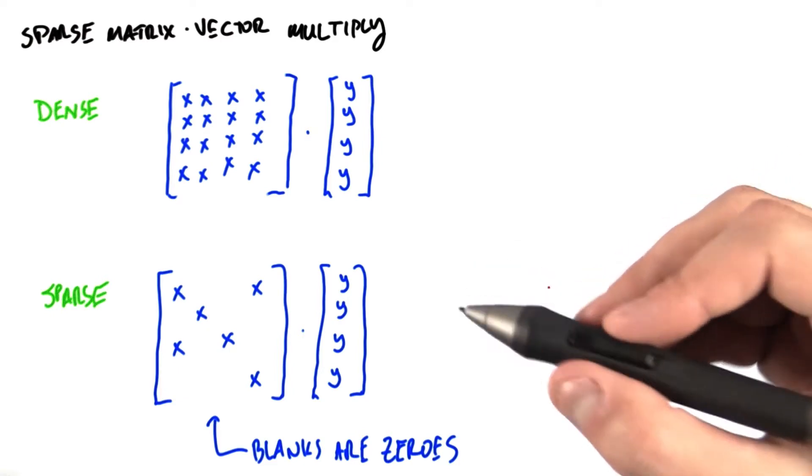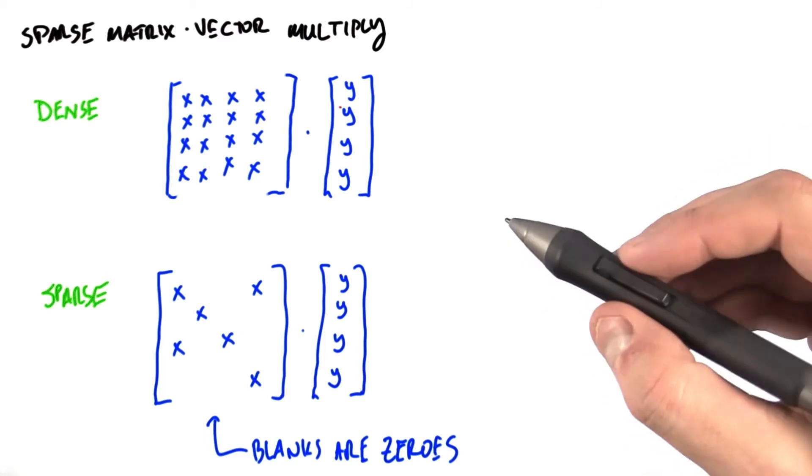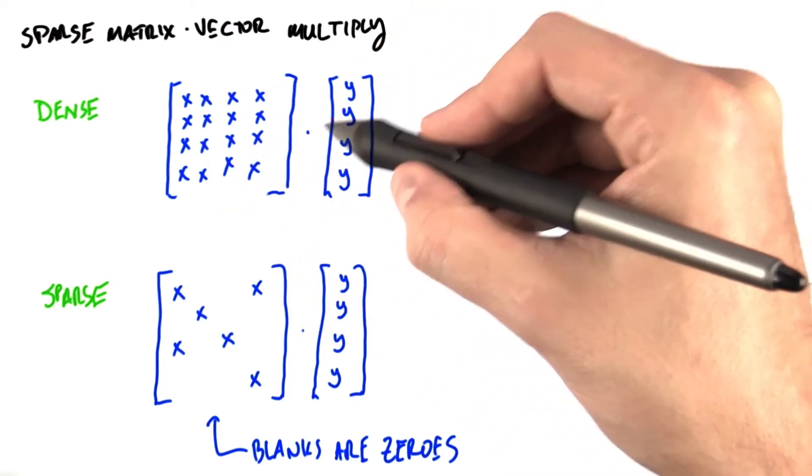What we're going to look at today is how to implement this efficiently. So first, a quick recap on what SPMV is. We wish to multiply a matrix by a vector.